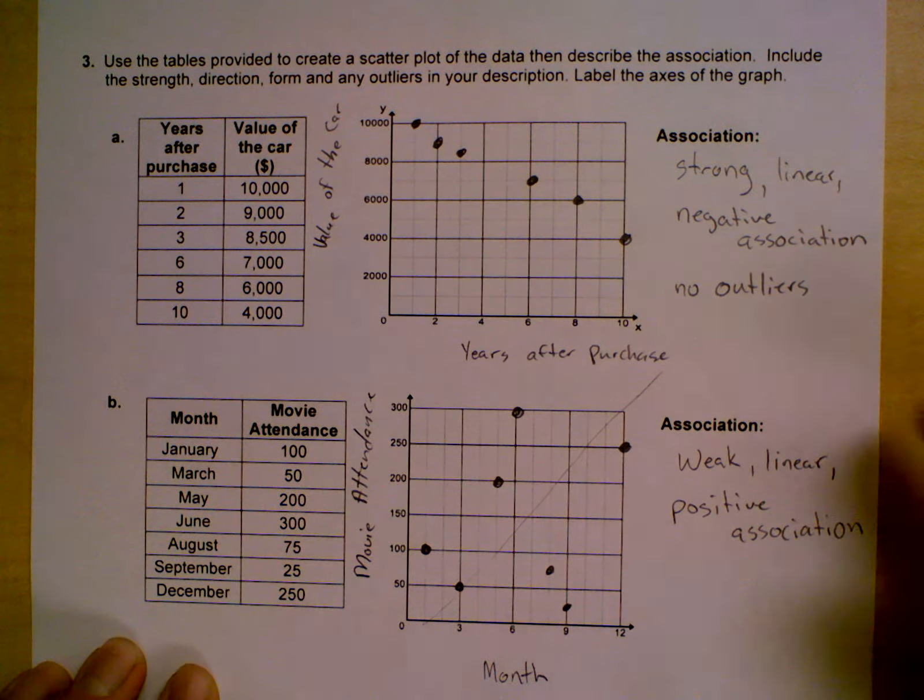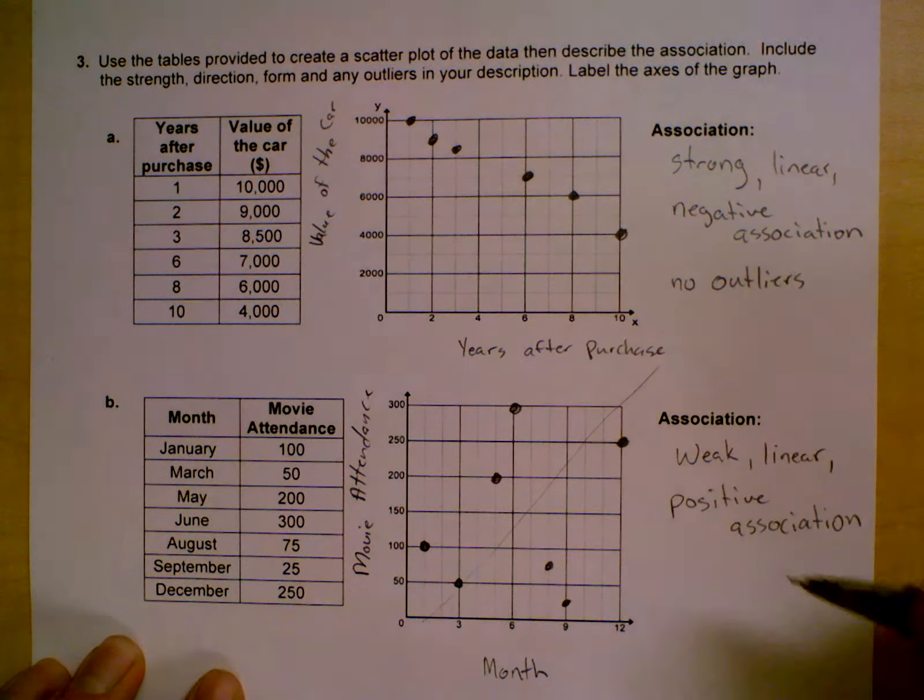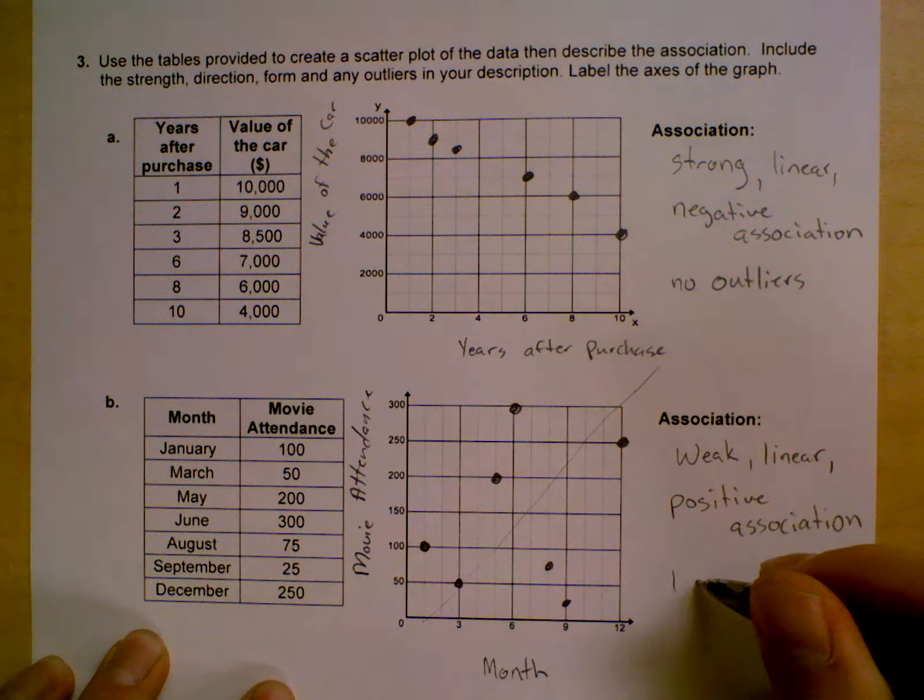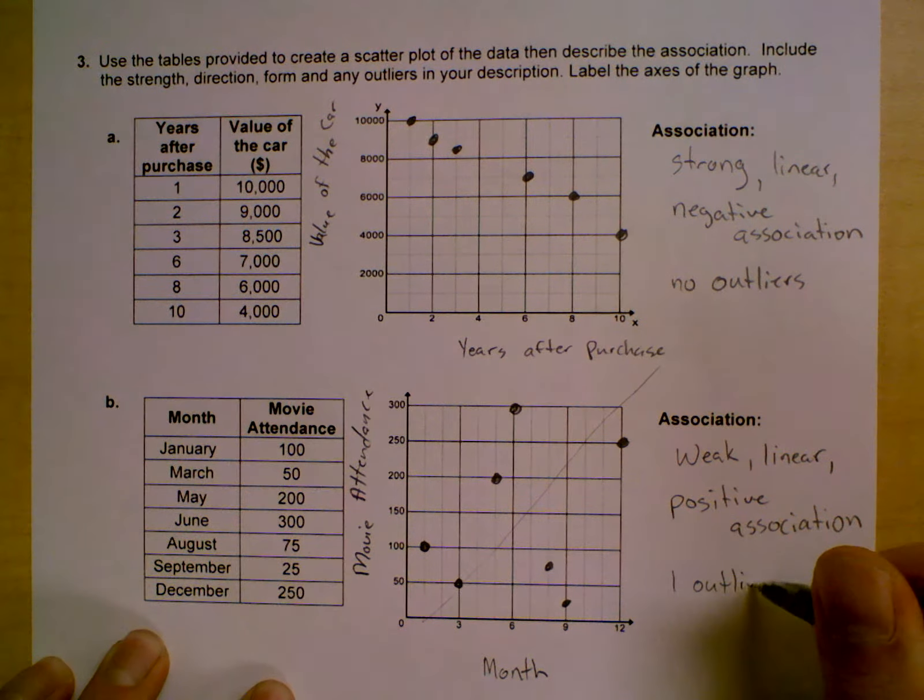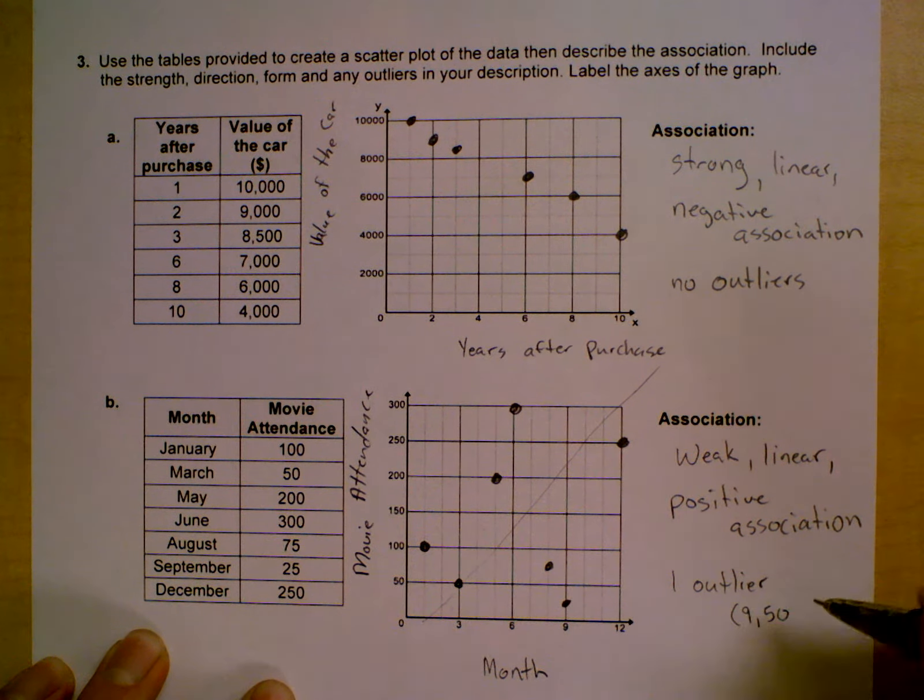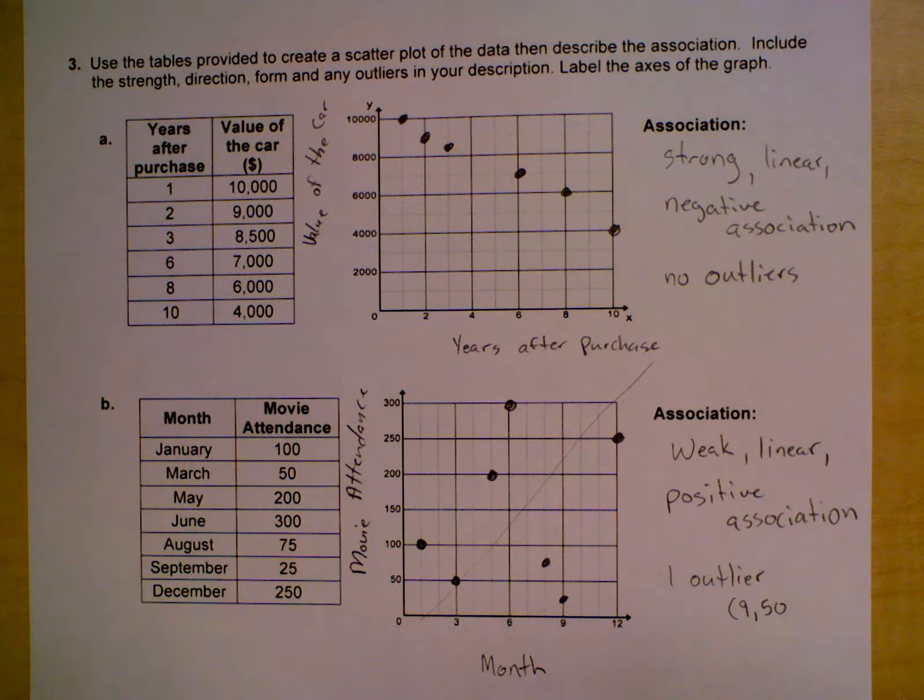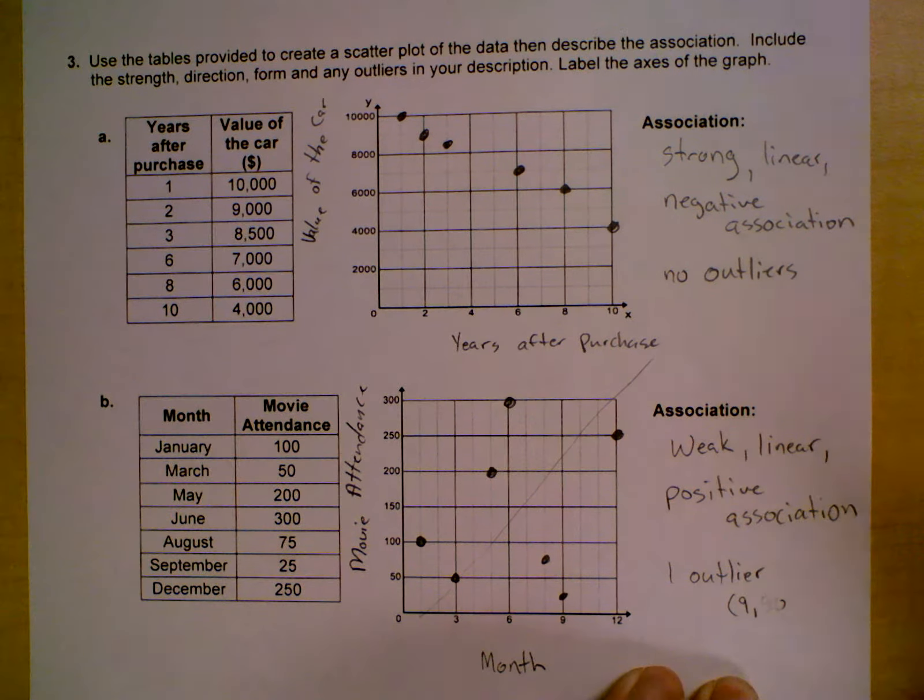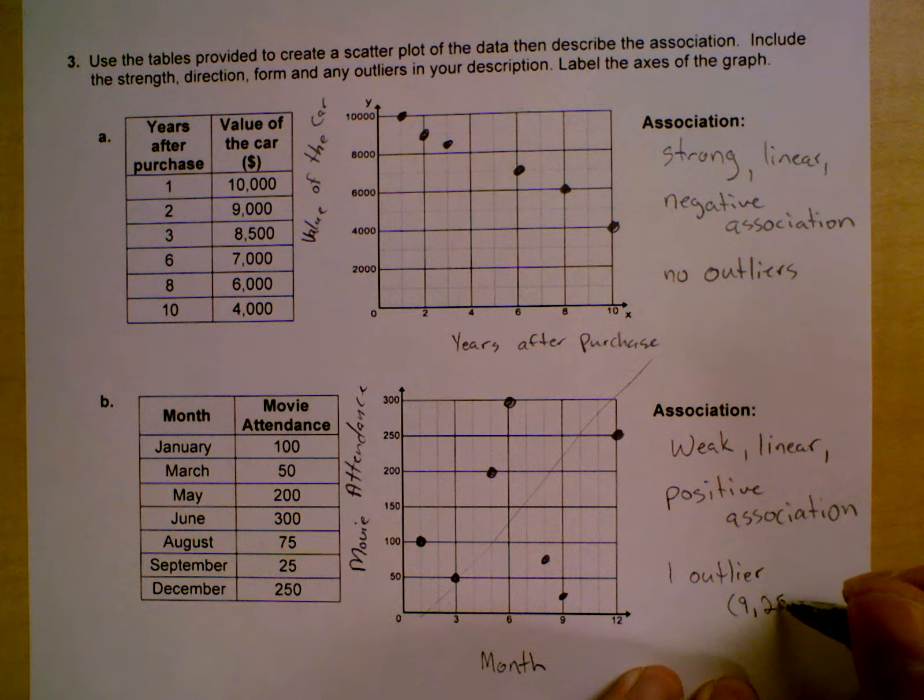I would say we do have an outlier. I would say nine comma fifty is my outlier. I'm sorry, nine comma twenty-five. Let me fix that—nine comma twenty-five is my outlier.